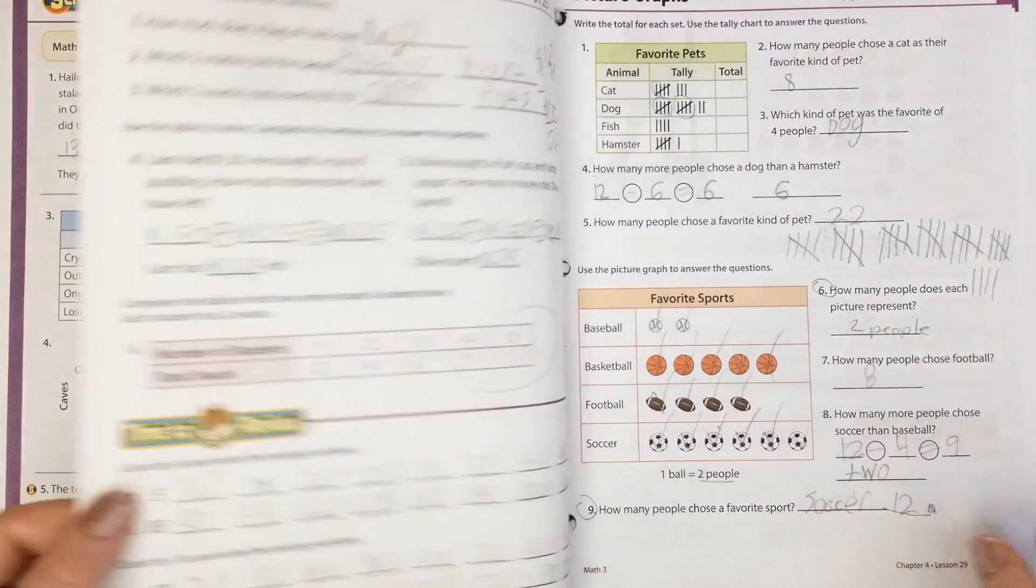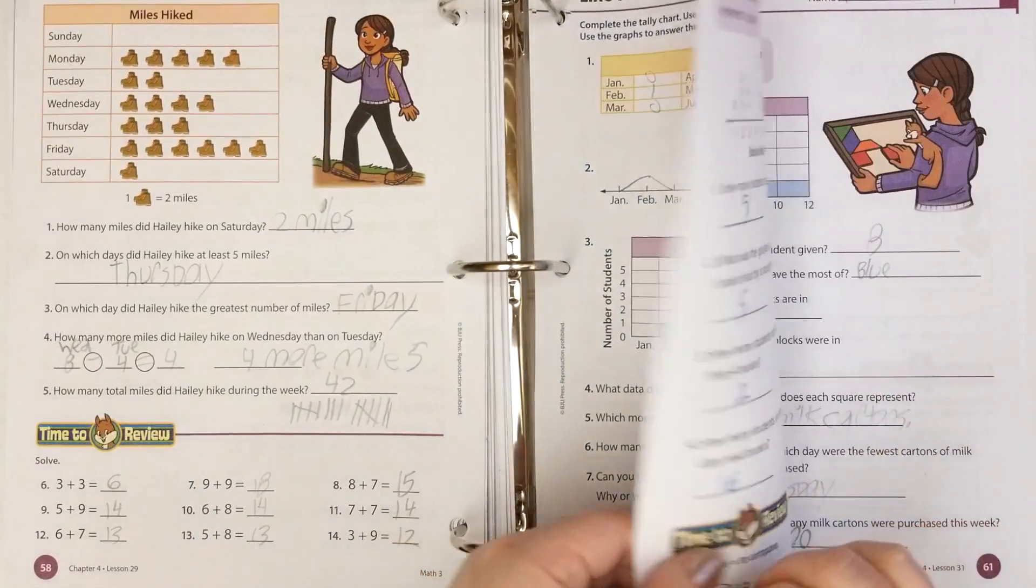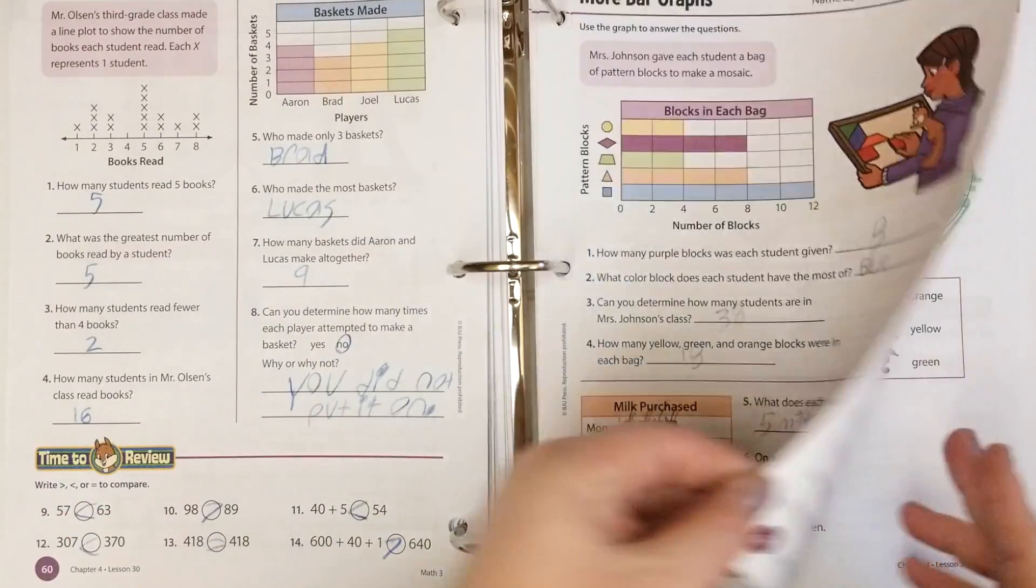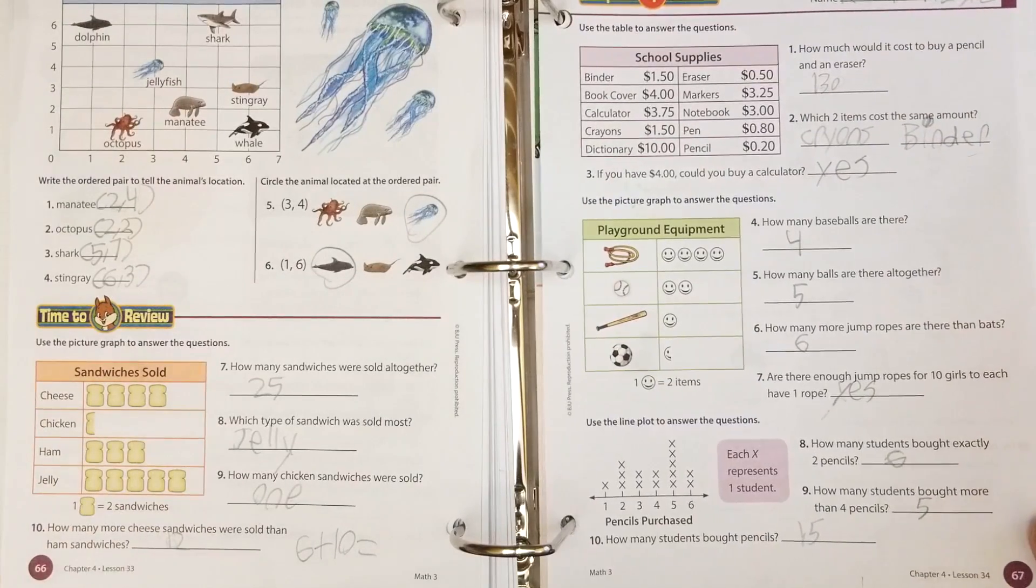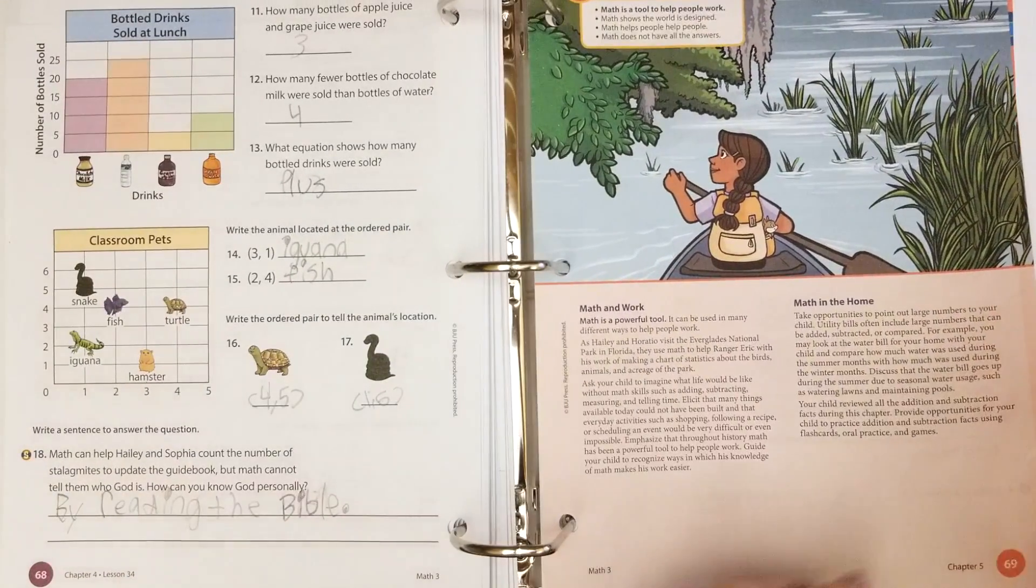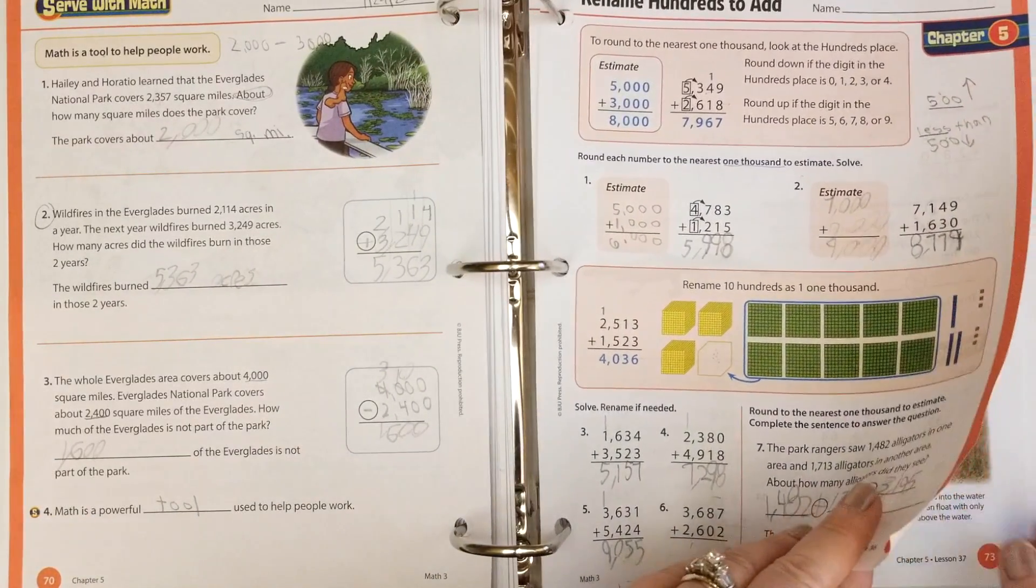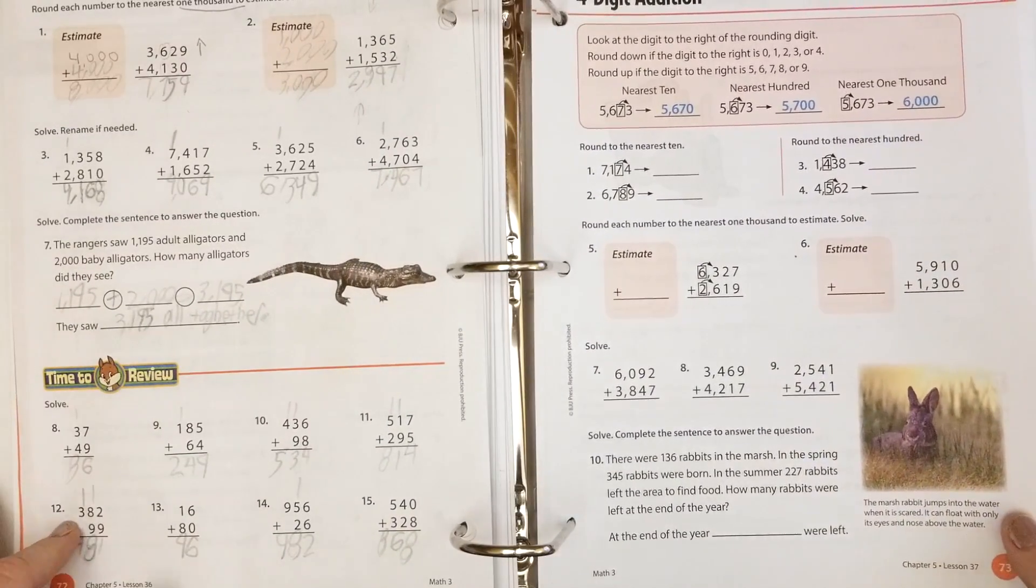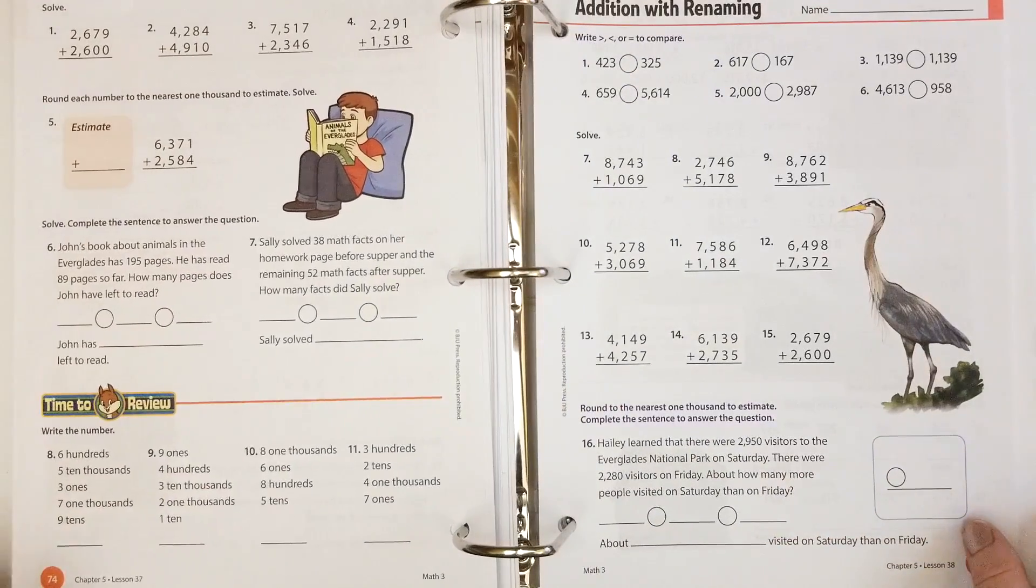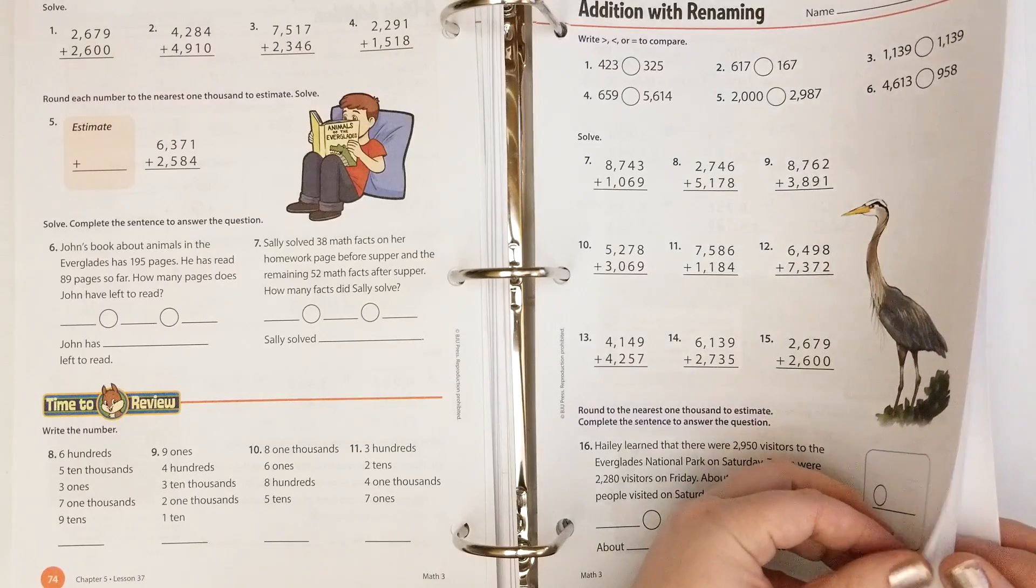Chapter four where they were doing charts and tables, this is her favorite thing. They did tallies, picture charts, line plots, bar graphs, circle graphs, and then they had a review. Chapter five, they're going over round to estimate, rename hundreds to add. This is where we left off today, so she'll be doing comparing numbers, addition with renaming, adding thousands, four and five digits.